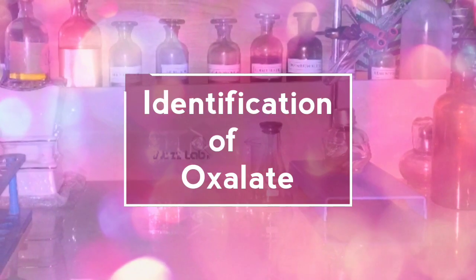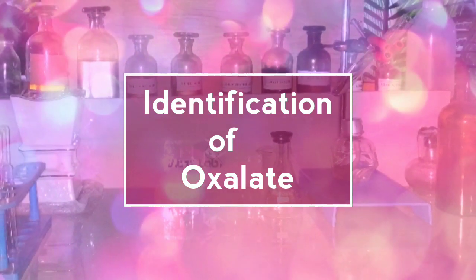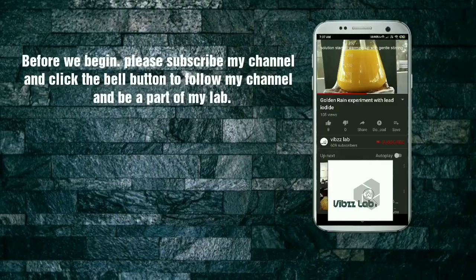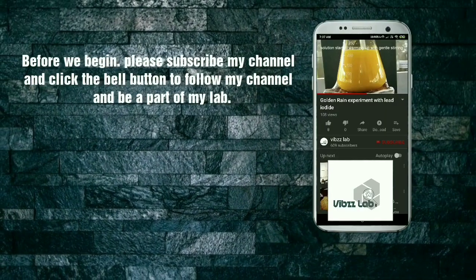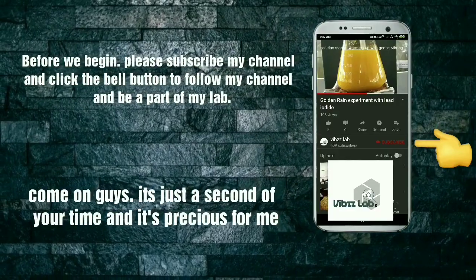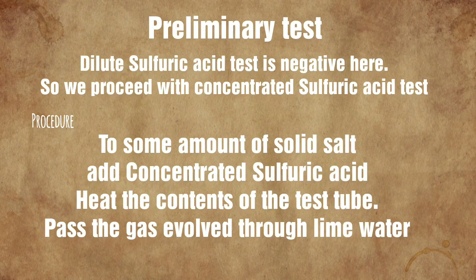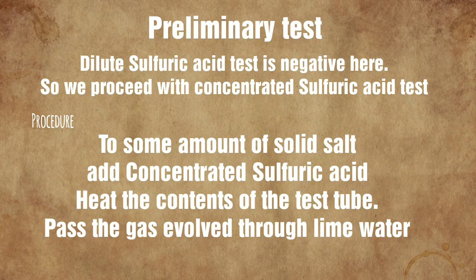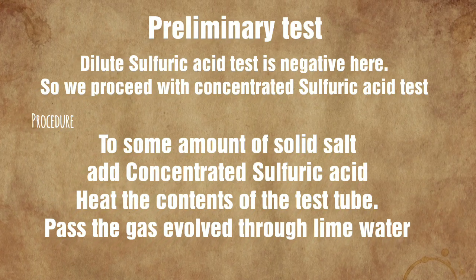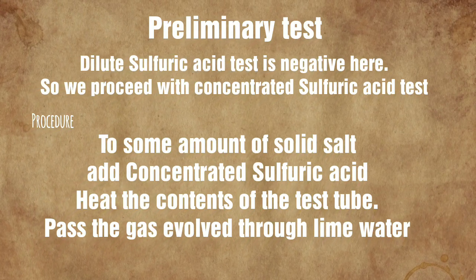Hello friends, today we will be doing the identification of oxalate anion. Oxalate belongs to the concentrated sulfuric acid group, and while heating the contents of the test tube, we pass the gas through lime water.